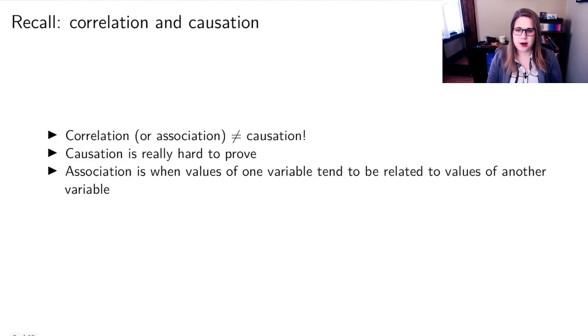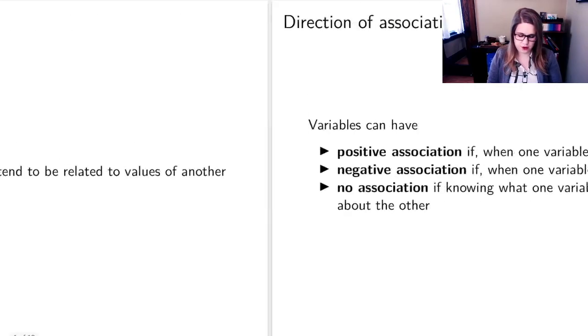Just as a reminder, correlation is not causation. Causation is really hard to prove, but association is when values of one variable tend to be related to values of another variable.